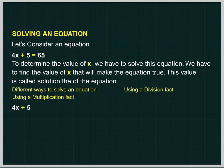4x plus 5 equal to 65. We transpose 5 to right-hand side. 4x equal to 65 minus 5 equal to 60.